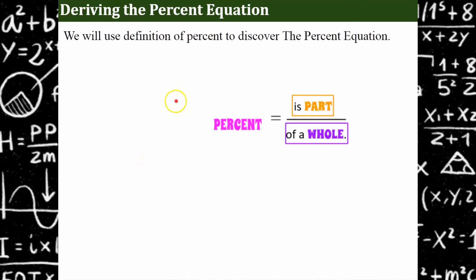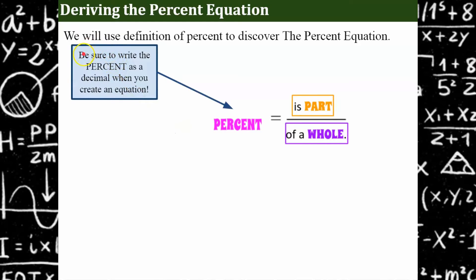You should remember from your previous learning that a percent is a ratio — it's a ratio of a part over a whole. So a percent is a part of a whole. When we write an equation, be sure to write a percent as a decimal. An algebraic equation can't have the percent symbol in it, so we're going to convert a percent to a decimal to use it algebraically in an equation.